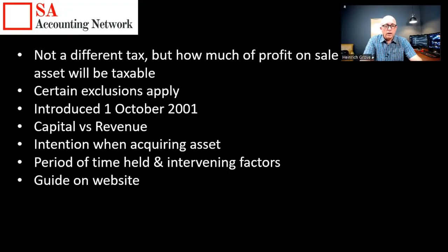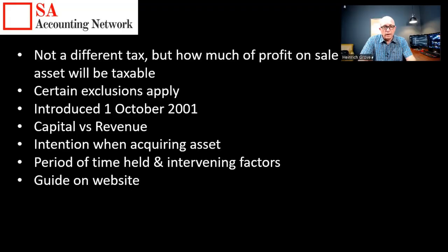The main argument around capital gains tax is distinguishing when something is capital in nature versus revenue in nature. That thousand-page guide goes into great depth on this, because if it's capital in nature you pay a little bit lower tax than if it's revenue in nature. The intention when acquiring an asset is really important — if your intention is to buy and sell it, then it will be treated as normal revenue, so you can't use the lower tax rates.